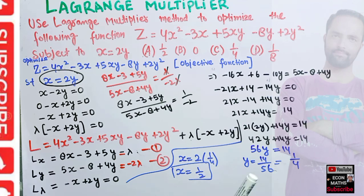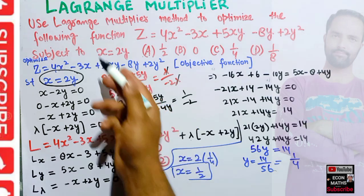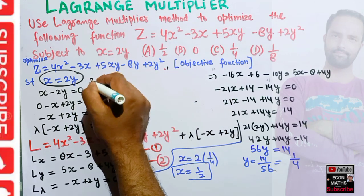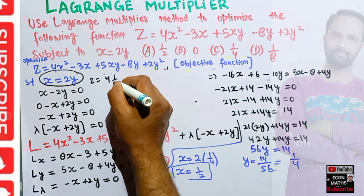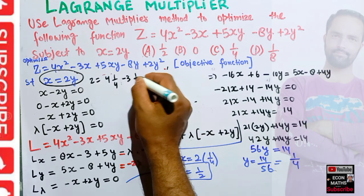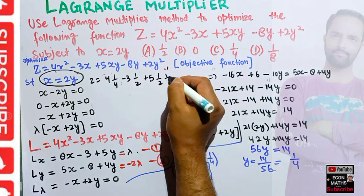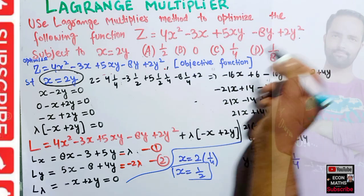Now we need to find the value of the objective function at these critical points. We plug x = 1/2 and y = 1/4 into z = 4x² - 3x + 5xy - 8y + 2y². So z = 4(1/4) - 3(1/2) + 5(1/2)(1/4) - 8(1/4) + 2(1/16).